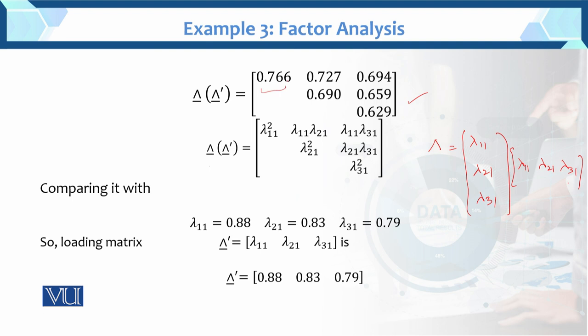Lambda 11 squared equals 0.766; taking the square root gives lambda 11 = 0.88. Lambda 21 squared gives lambda 21 = 0.83 after taking the square root. Similarly we find lambda 31. Then Lambda prime for k equals 1 gives us the values lambda 11, lambda 21, lambda 31.